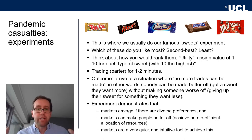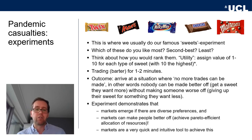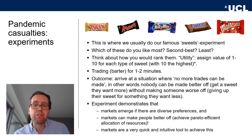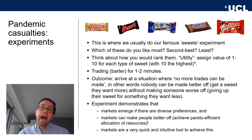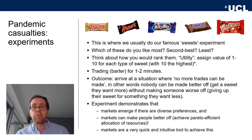That's the concept of Pareto efficiency in action — no more trades are possible, and there's no way to reallocate without taking something away from someone that they don't want to give up. We arrive there after a minute or two of trading — very quick and efficient. The experiment basically demonstrates that markets emerge naturally without any specific instructions. You just run around and shout. Markets emerge if there are diverse preferences, and they show how markets can make people better off and achieve a Pareto efficient allocation of resources.